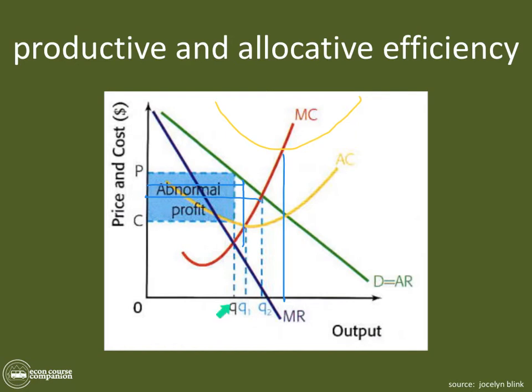When you draw this, draw it in the most convenient place possible — the way Jocelyn Blink drew it — to show where profit maximizing, productive efficiency, and allocative efficiency line up the best. Just draw productive and allocative efficiency for a monopoly with all the curves lined up like that.